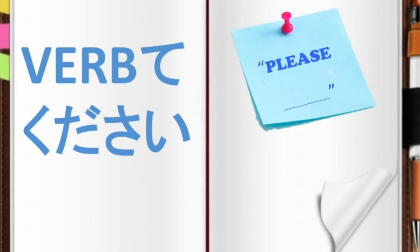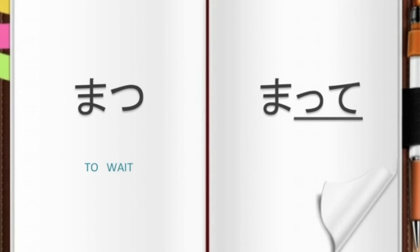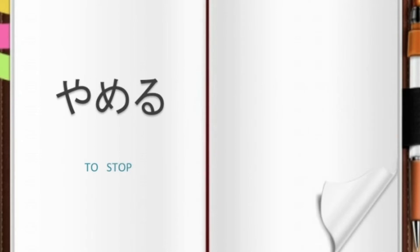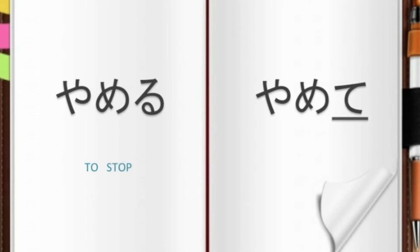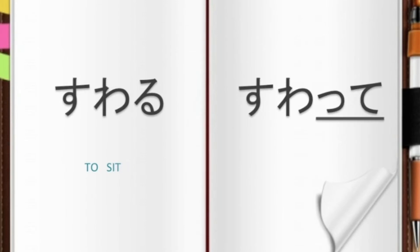Previously, we learned how to conjugate verbs into te-form. For example, matsu becomes matte, yameru becomes yamete, and suwaru becomes suwatte.